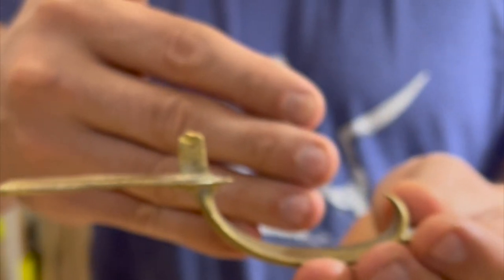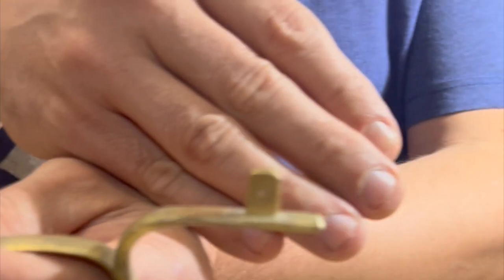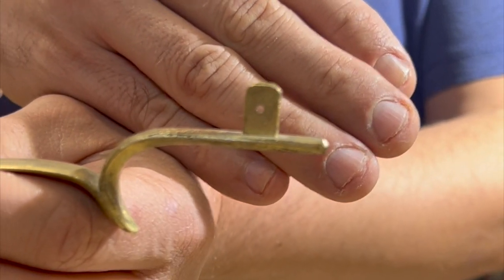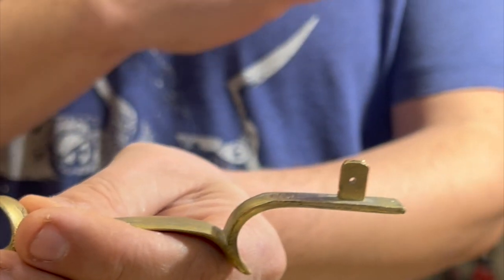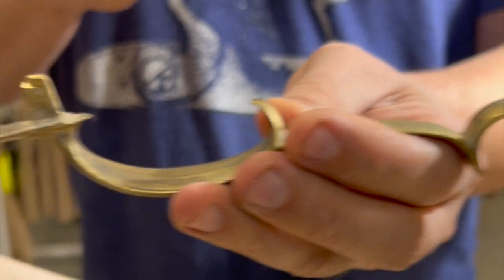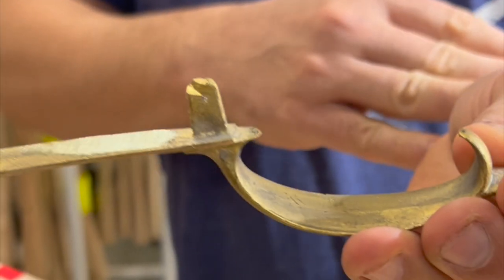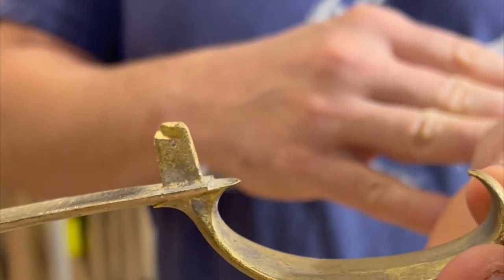The best way to remove the trigger guard, because it's kind of a tight fit sometimes at the back, is just to hit this little extension that sticks up. That brings the back out first, then you can lift the rest of it out.